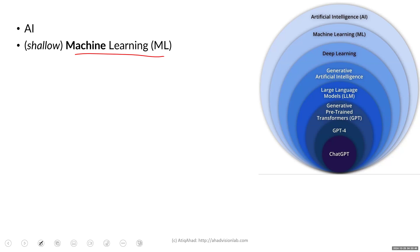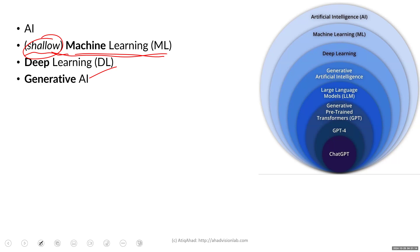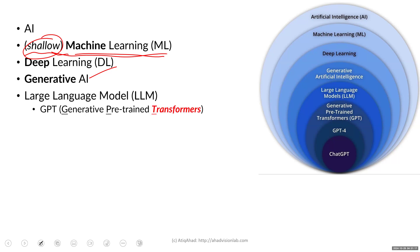Traditionally, more than a decade ago, deep learning became a new phenomenon as GPUs and easier servers allowed running big datasets. Prior to that it was basically shallow machine learning. Nowadays we use deep learning much more, along with generative AI and large language models like GPT — generative pre-trained transformers.